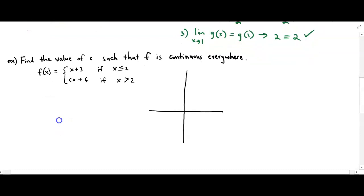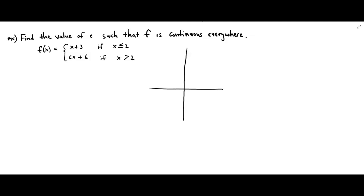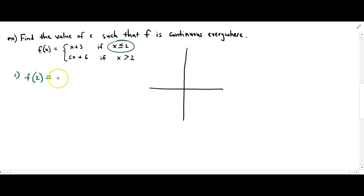In our next example, we're going to find the value c such that f is continuous everywhere. We have a piecewise function: x plus 3 when x is less than or equal to 2, and cx plus 6 when x is greater than 2 — that's the letter c. We check our conditions for continuity. The first condition: is our function defined at x equals 2? We look at the part with the equal sign and plug in 2 for x — 2 plus 3 equals 5. Check. The function is defined.